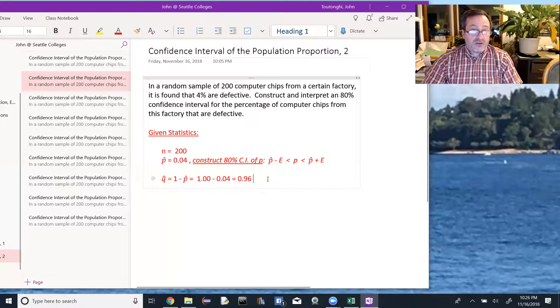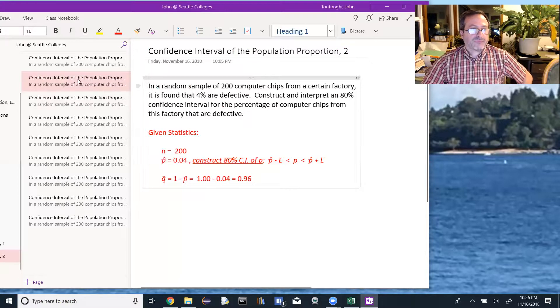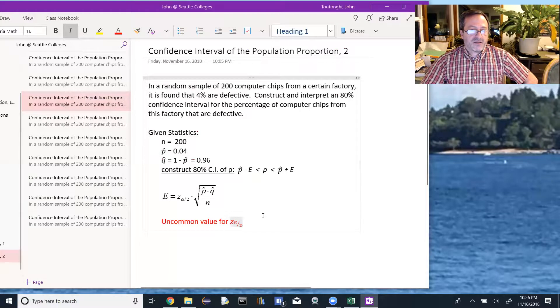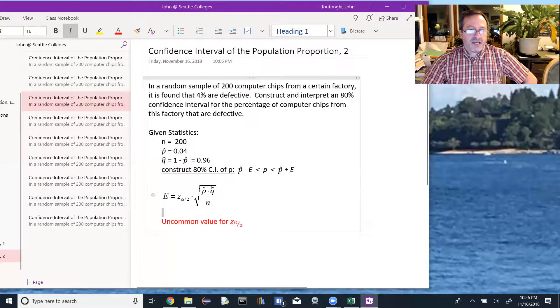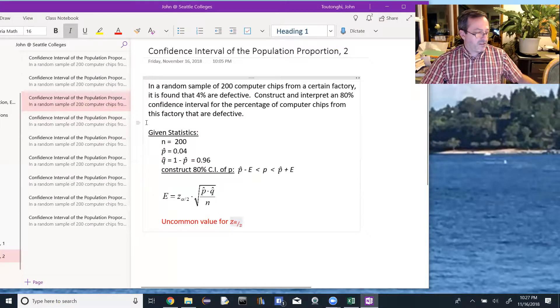We're going to need q hat, and that's 1 minus p hat, so 1 minus 0.04 is 0.96. Then we need to find our error. So for our error formula, the error is z alpha over 2 times the square root of p hat times q hat over n. We have all those values now except the z alpha over 2 because we have an uncommon value for z alpha over 2.